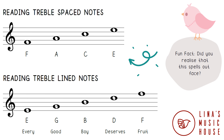Music is written on a staff of five lines and four spaces. The notes written in the treble spaces from bottom to top spell the word FACE: F-A-C-E. The notes written on the lines from bottom to top is E-G-B-D-F. This doesn't spell anything, so we need to think of a short sentence to link up these letters: Every Good Boy Deserves Fruit. The first letter of each word is the note name.